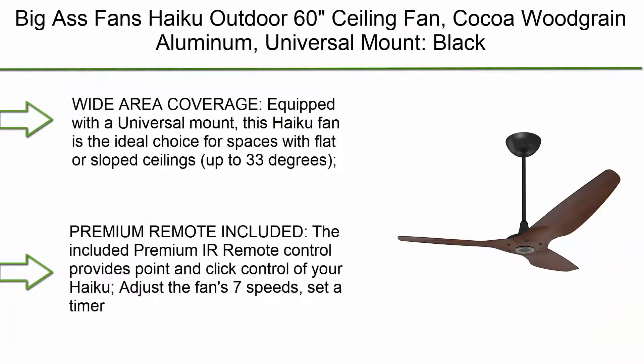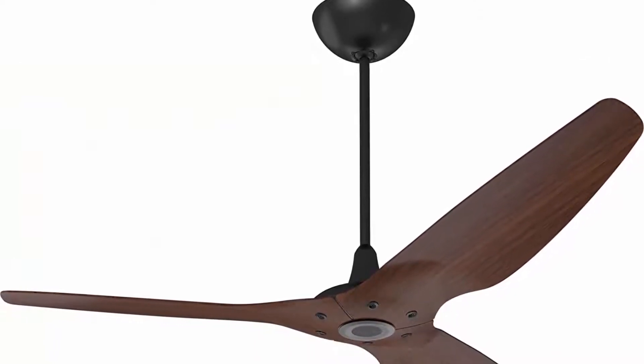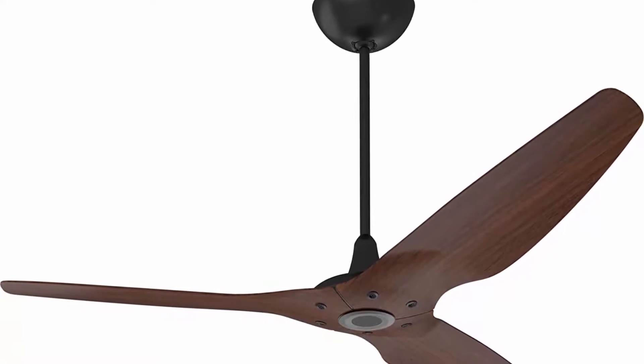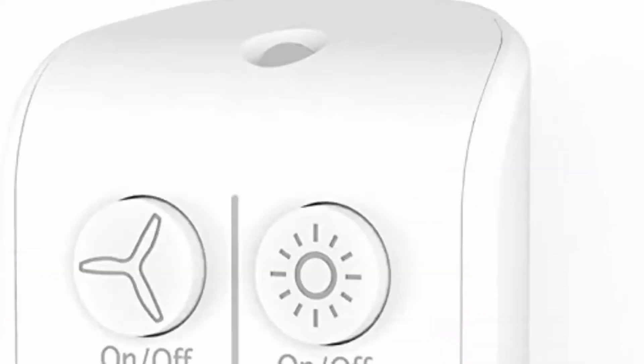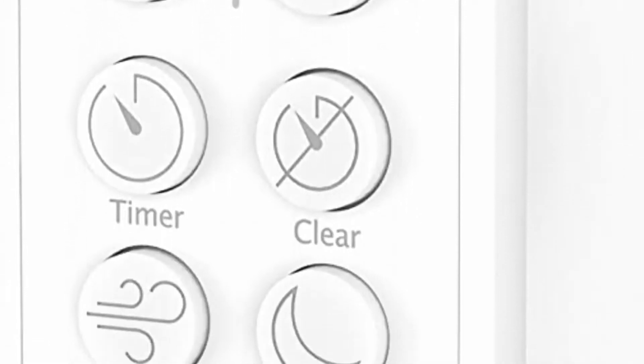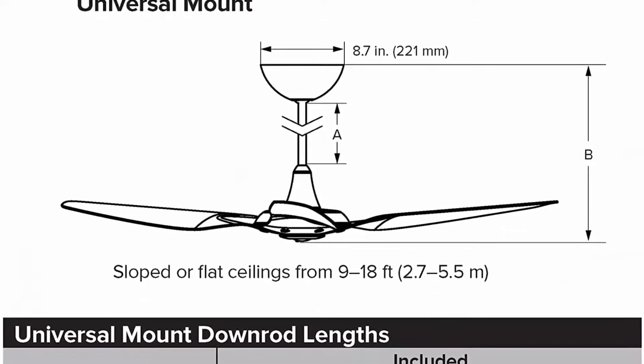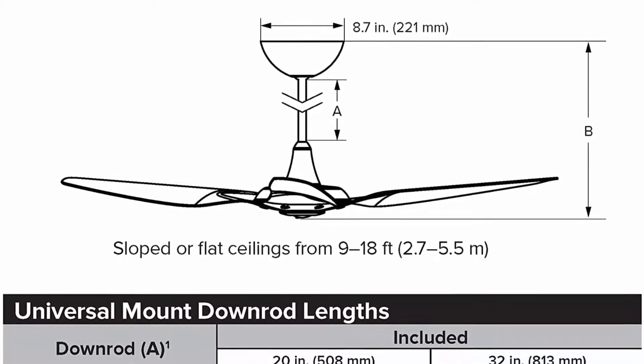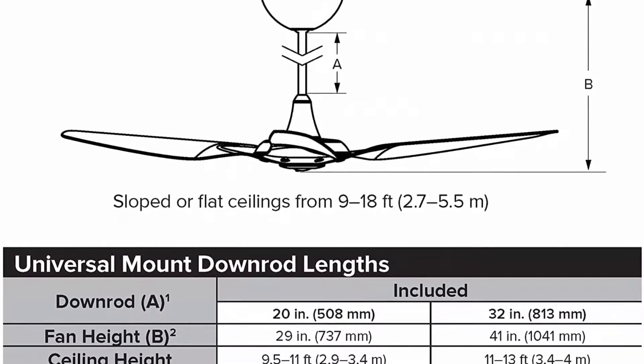Top 4. Big Ass Fans Haiku Outdoor 60 ceiling fan, cocoa wood grain aluminum, universal mount, black, premium remote control included, IPX2 rated for covered outdoor use. Wide area coverage. Equipped with universal mount, this Haiku fan is the ideal choice for spaces with flat or sloped ceilings up to 33 degrees. The 60 inch blade diameter moves enough air to keep spaces up to 20 feet by 20 feet comfortable all year long. Includes 20 inch and 32 inch extensions for ceilings 10.5 feet to 14 feet high. Premium remote included. The included premium IR remote control provides point and click control of your Haiku. Adjust the fan's 7 speeds, set a timer, and activate sleeper whoosh modes. When not in use, keep it where you can find it again in the included convenient wall mount.